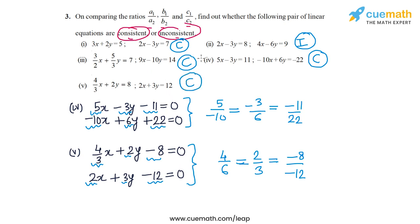So of the five given pairs, the first, third, fourth, and fifth are consistent, and the second one is inconsistent. That completes question three of this exercise.